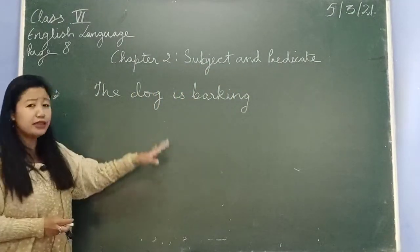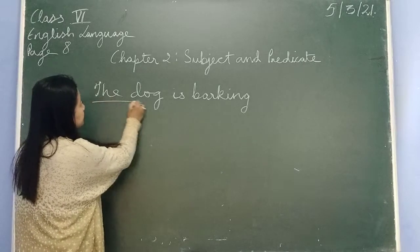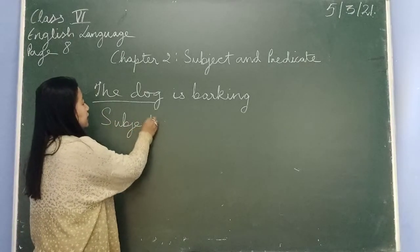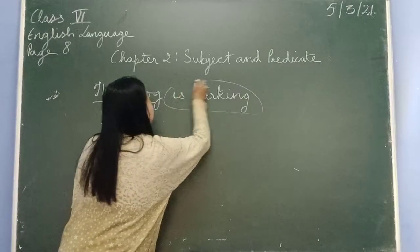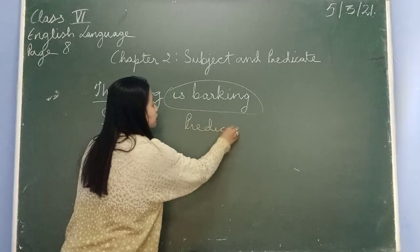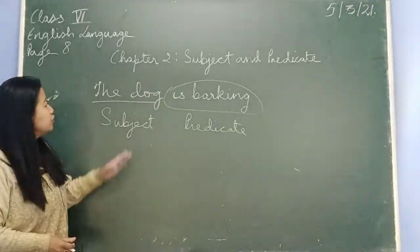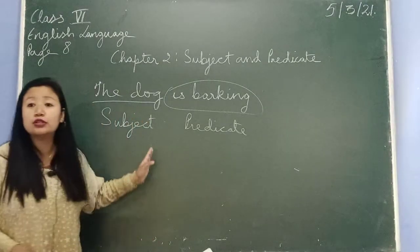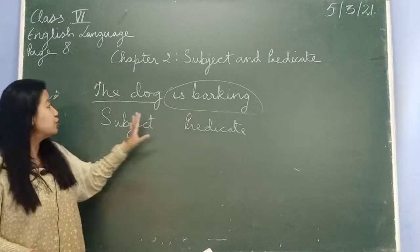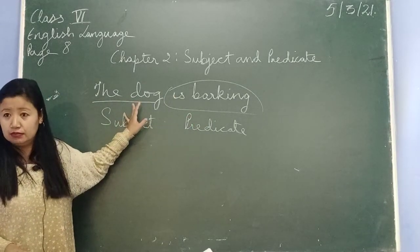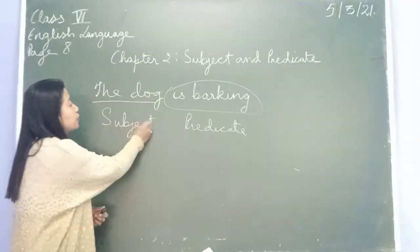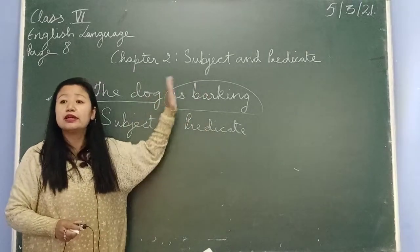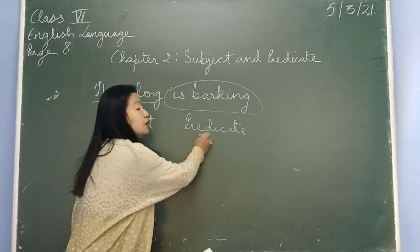Now in this chapter we are studying about subject and predicate. When I say 'the dog' — what is it? This is the subject. And 'is barking' is the predicate. What do we mean by subject? Subject tells us who or what the sentence is about. Here it is about the dog, so 'the dog' becomes the subject. What is the dog doing? The dog is barking, so that becomes the predicate.